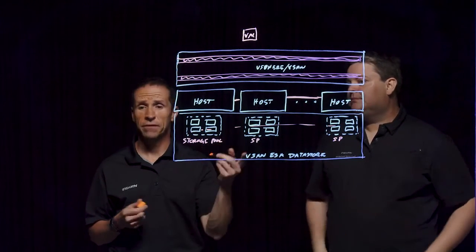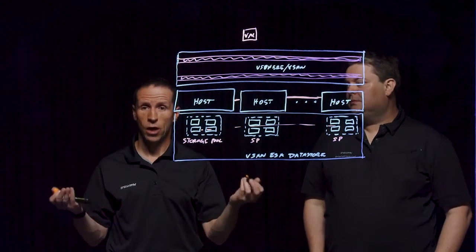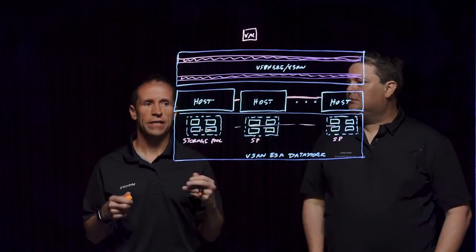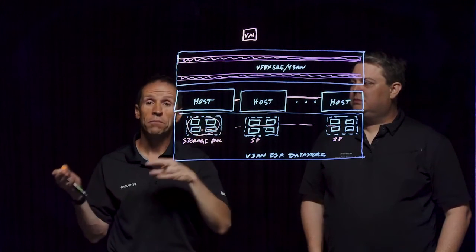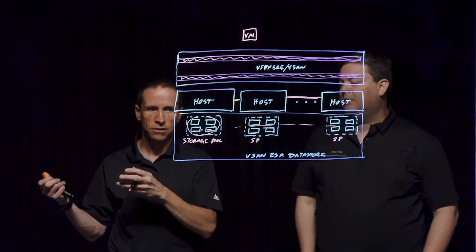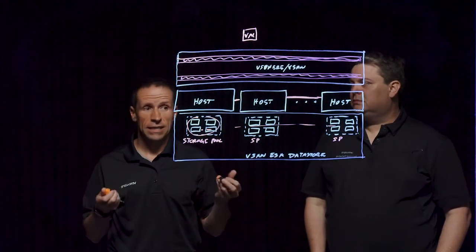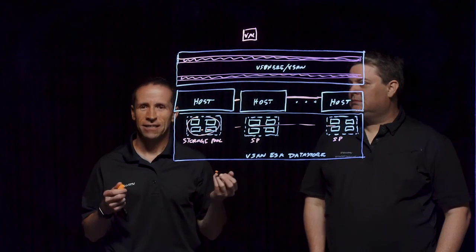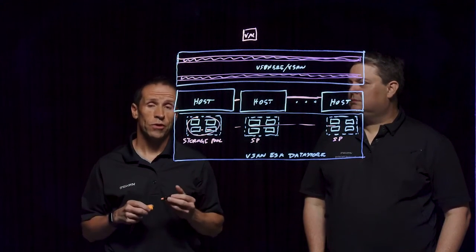That's a great point about the networking. You might think the express storage architecture is going to require more networking — we do have higher standards, but that's only because we can exploit the capabilities of these next generation storage devices. If you migrate your existing workloads from the original storage architecture and previous versions of vSAN over to the express storage architecture, you will in fact see less resource utilization for those very same workloads. That's one of the great benefits of the express storage architecture — doing more with what you already have.